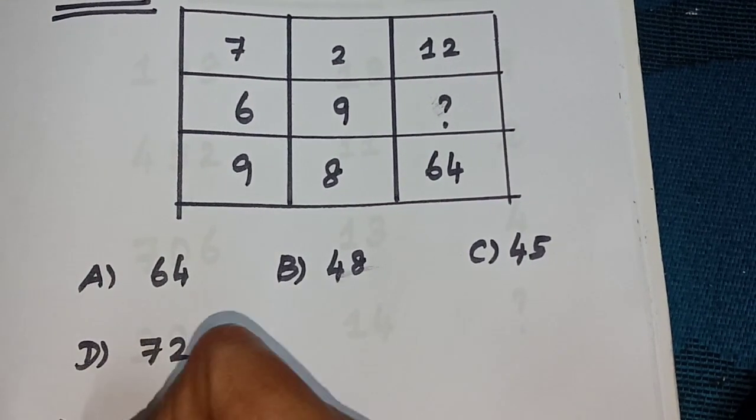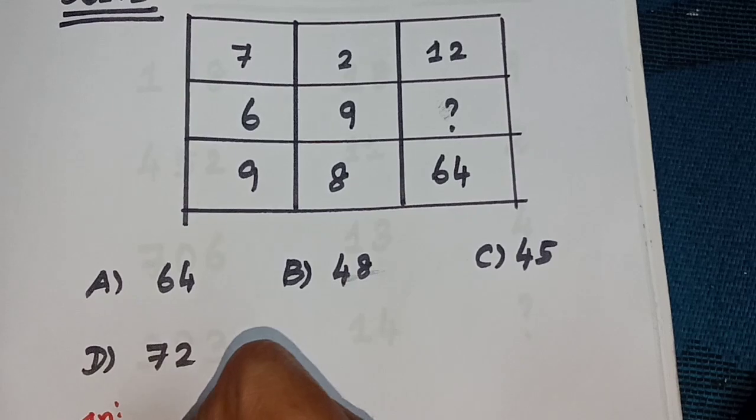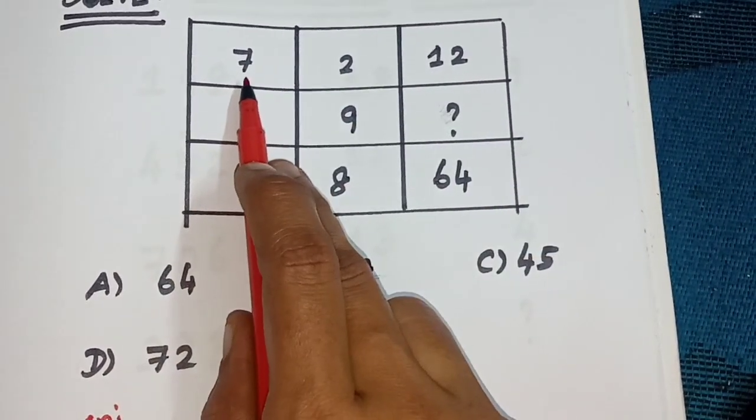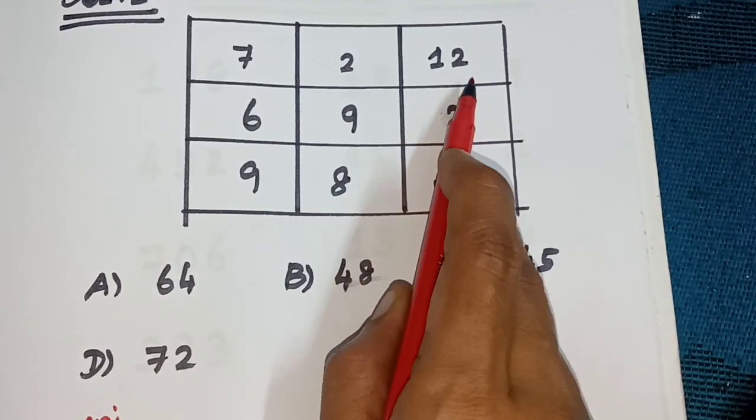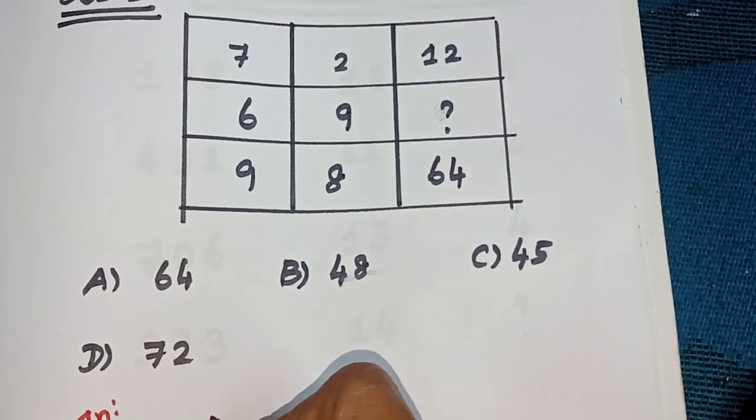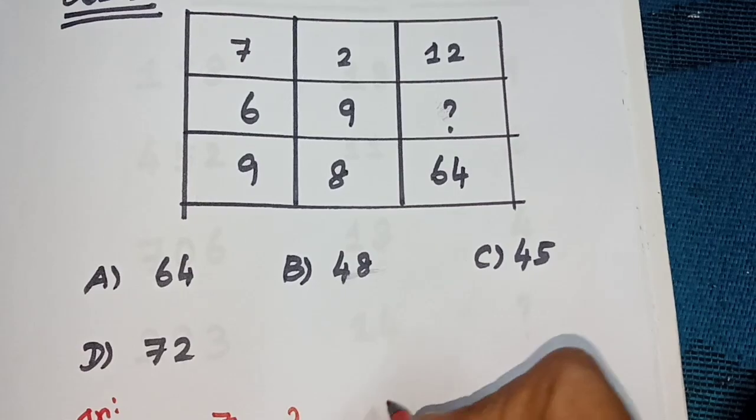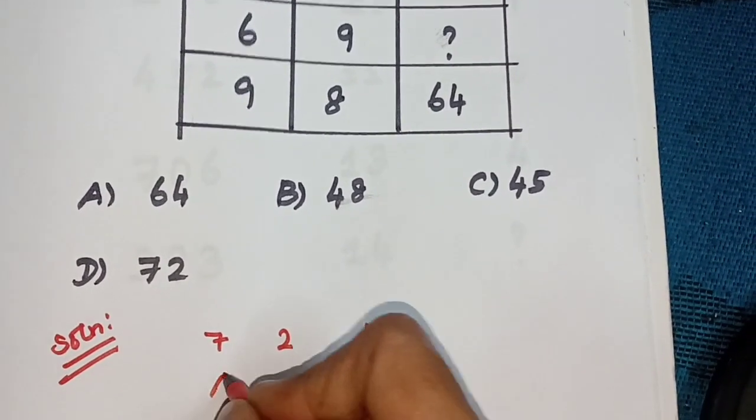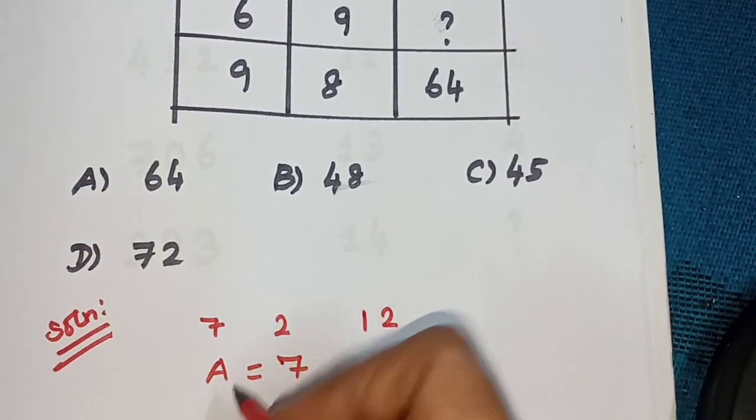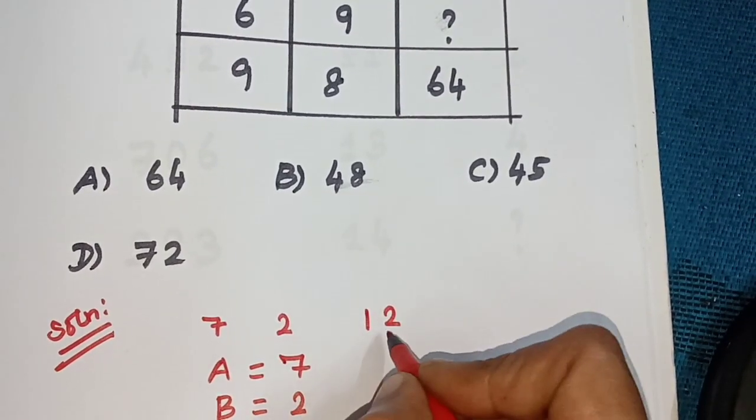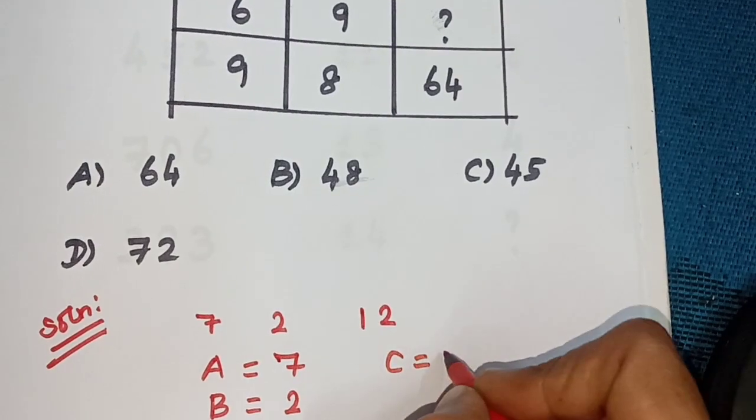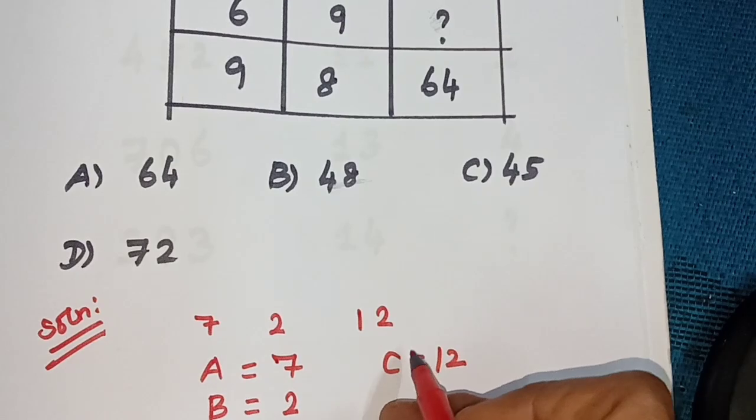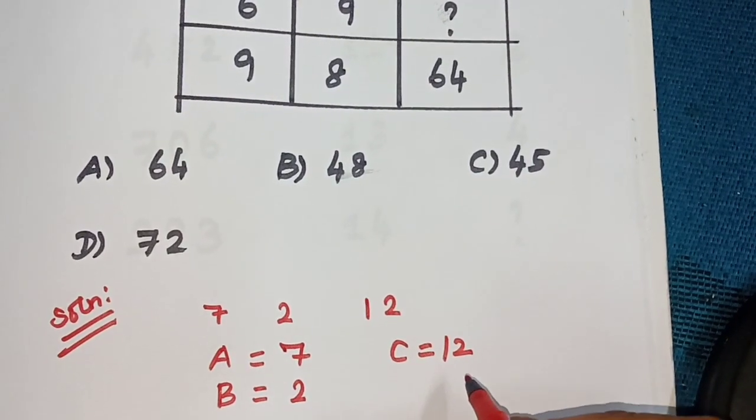First, see the question: 7, 2, 12. A is 7, B is 2, and C is 12.